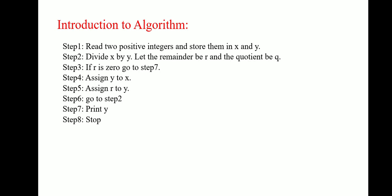But else, if R is not 0, then step 4 is assign Y to X, assign R to Y and go to step 2. So, repeat the same process. This is the algorithm for finding greatest common divisor.